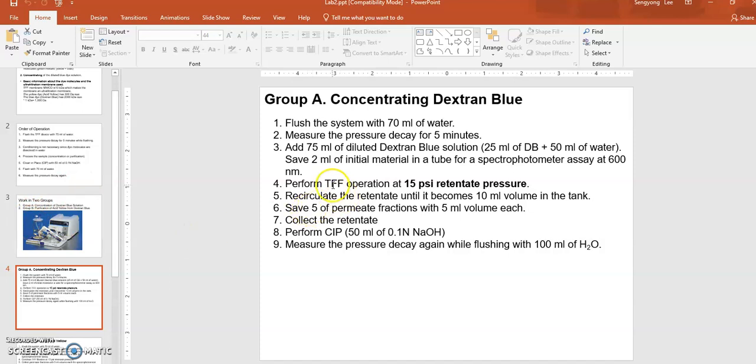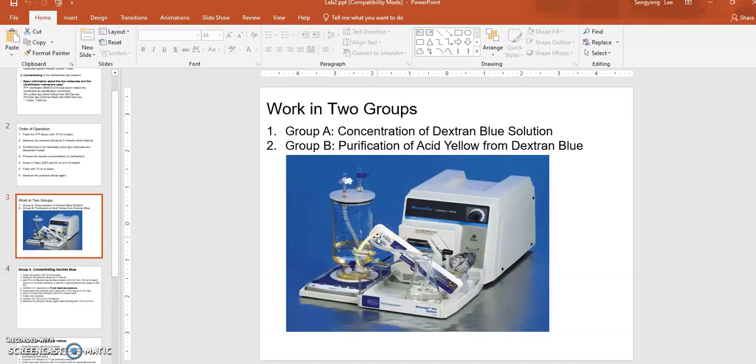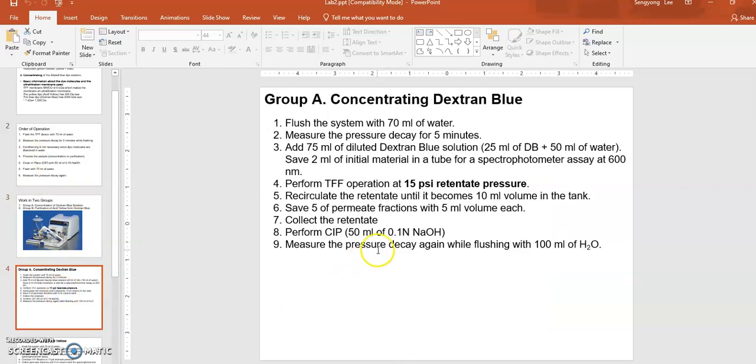to the start buffer tank. Start TFF operation at 15 psi retentate pressure. Recirculate the retentate until the tank volume reaches about 10 ml (from 75 ml to 10 ml - you'll lose a lot of water). During operation, collect about 5 ml of permeate fraction. The cassette has feed-in tubing, permeate tubing coming out, and retentate tubing going back.